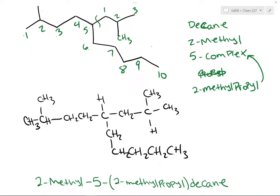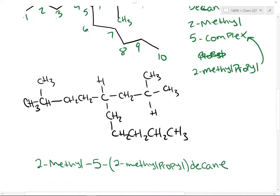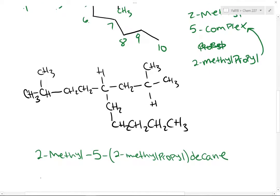If you know the name of this complex substituent, you can use it — it's isobutyl. So you could put that name in here: 5-isobutyl. I comes before M, so you would list it as 5-isobutyl-2-methyldecane.